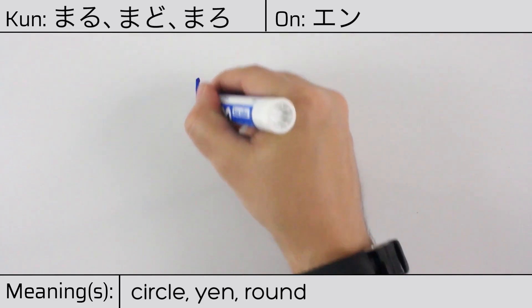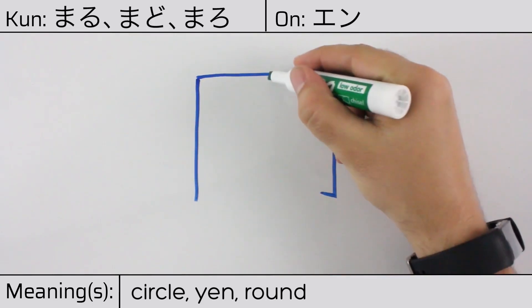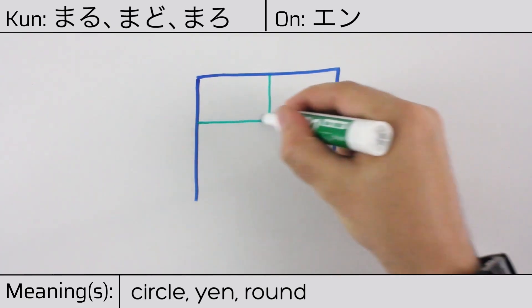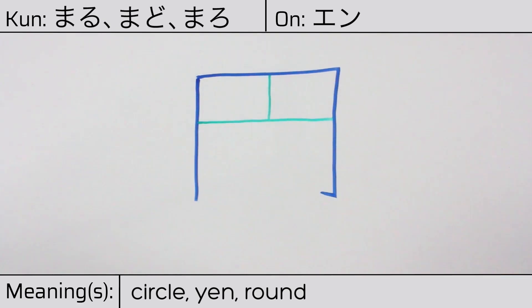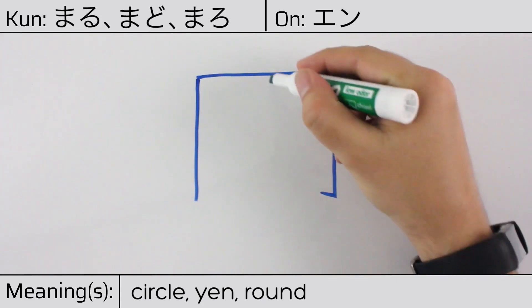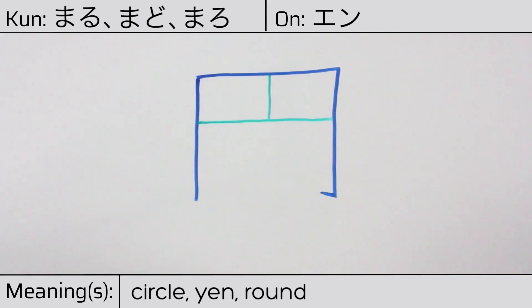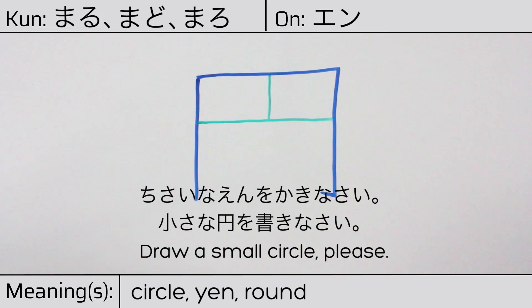This character is made up of the following radicals or parts: the enclosure radical known as keiigamae, a vertical stroke, and a horizontal stroke. You can remember this kanji by the following hint: rounded like a dragnet full of fish. Hopefully you can imagine this character as a net. Our example sentence is: Chisana en wo kakinasai — Draw a small circle, please.